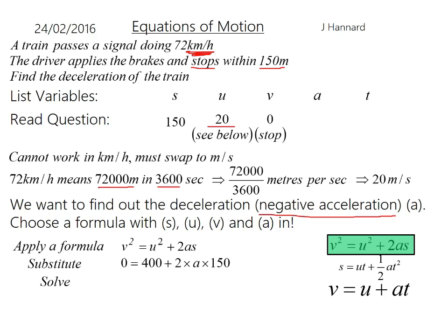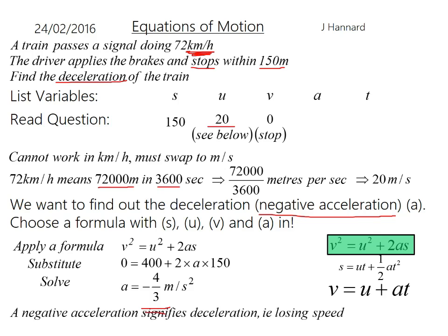Solve: take the 400 over, that becomes a minus, and divide that by 300. That equals minus 4 over 3 metres per second squared, and that makes sense because it wanted the deceleration. A negative acceleration signifies deceleration, i.e. losing speed.